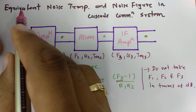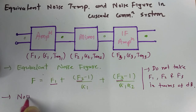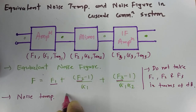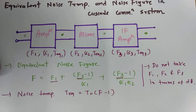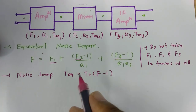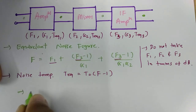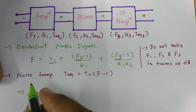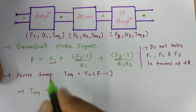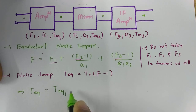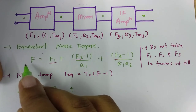Now I'll explain the equivalent noise temperature. We know that the equivalent noise temperature is T-equivalent = T0 × (F − 1). To derive the cascaded noise temperature formula, we substitute this relationship for each F term, and T0 cancels from both sides.